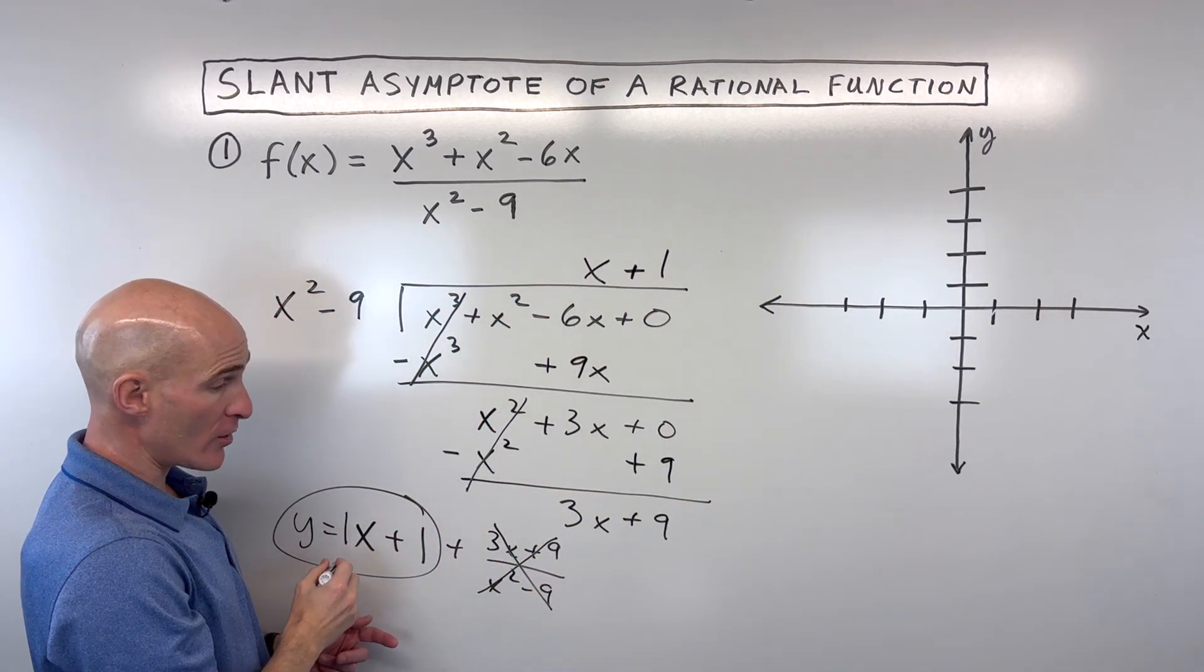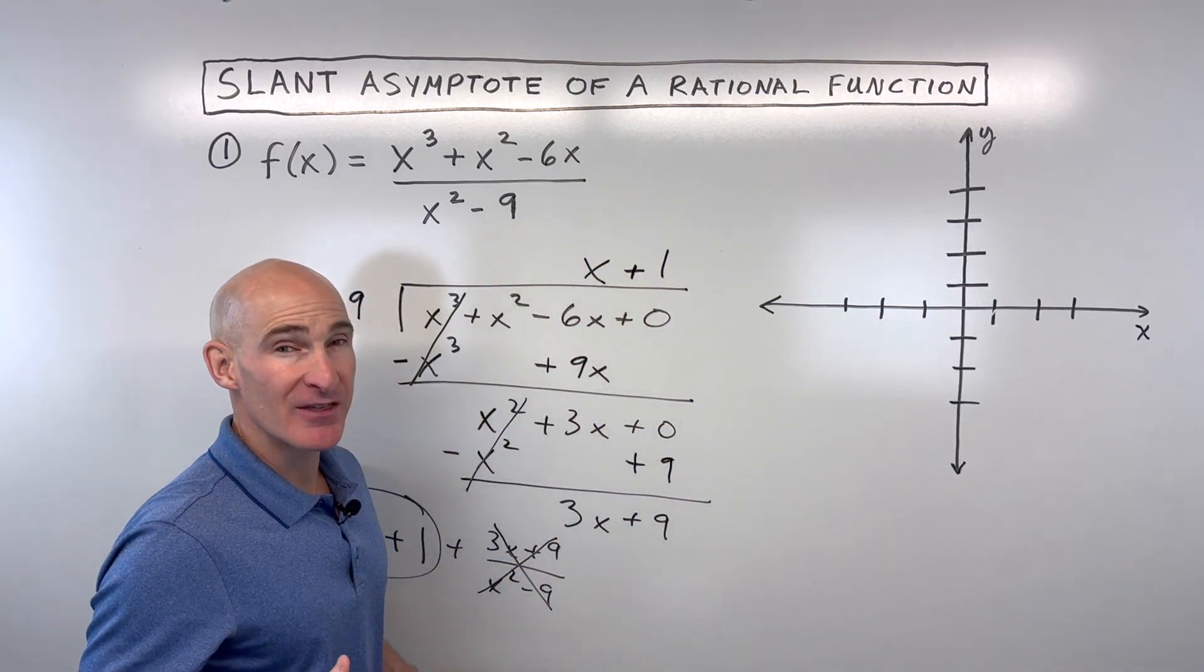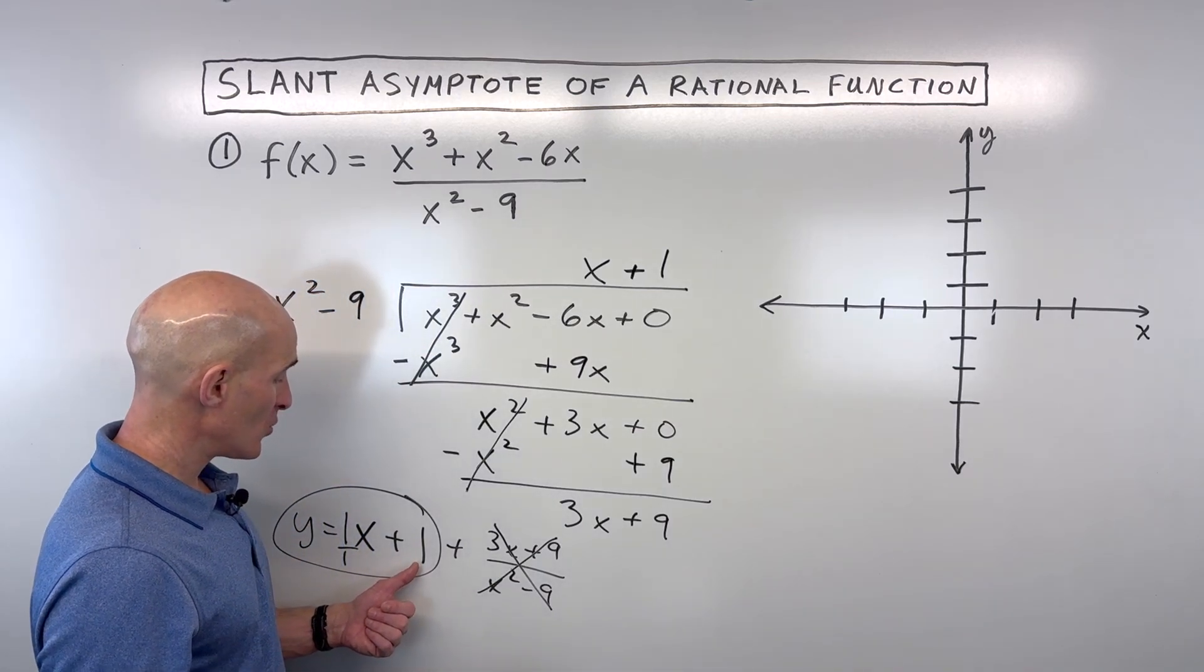So we're going rise 1, run 1. This is like 1 over 1. Now you don't want to put a point here because then you'll mistakenly think when you're graphing your function that that's a point the graph goes through. So let's just do it like this. We're going to have a y-intercept of 1 and a slope of 1, so rise 1, run 1.